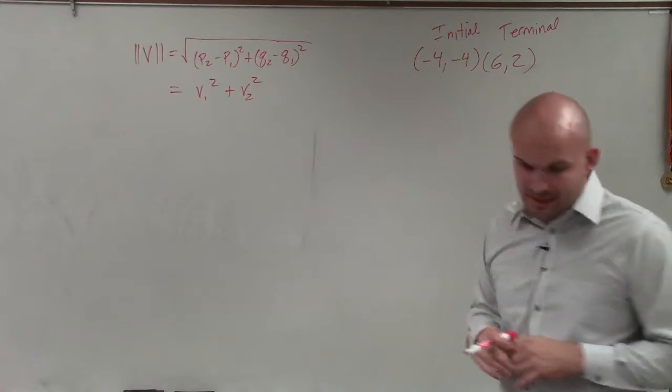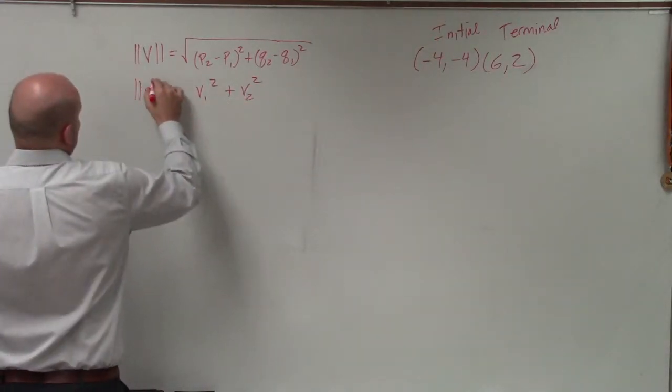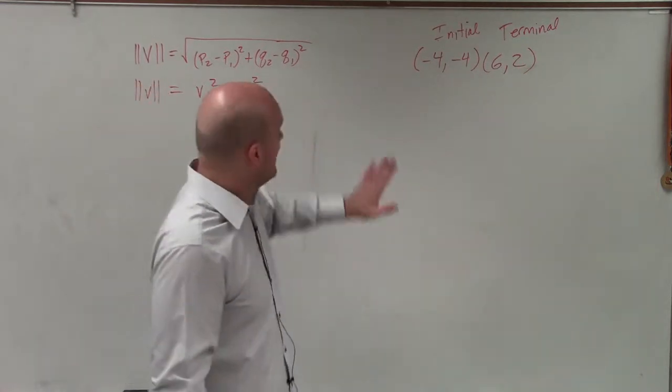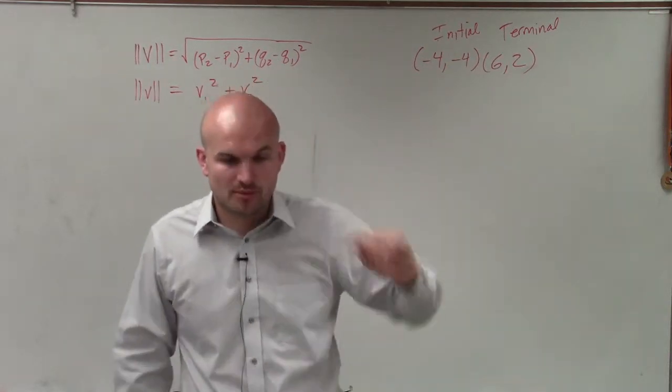Welcome, ladies and gentlemen. What I have here is to determine the magnitude of a vector. In this case, we have a directed line segment with negative 4, negative 4 as my initial point, and 6 comma 2 as my terminal point.